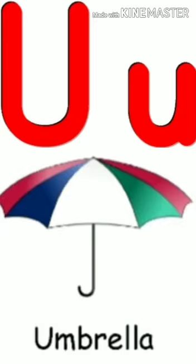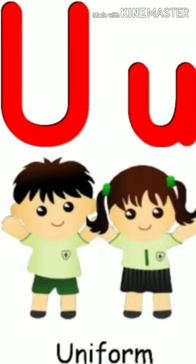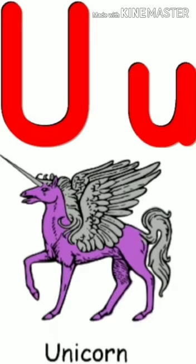Now come and let's see what are the objects that start from U: umbrella, urn, undergarment, uniform, unicorn. Now come and let's see how to make U.